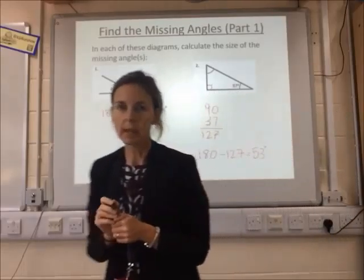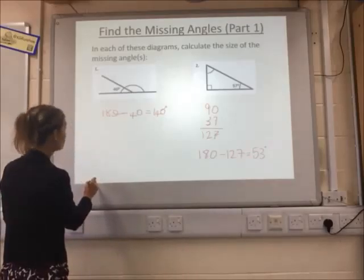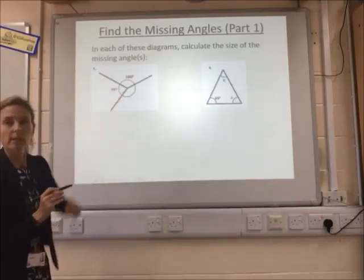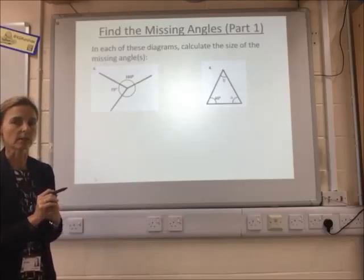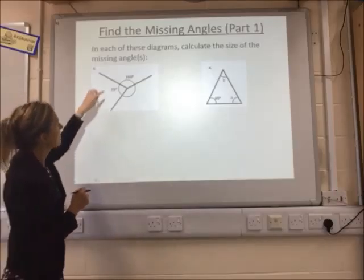Next one. We've got a point. You need to know that around a point, angles add up to 360 degrees. So what have we got so far? We've got 160 and 75.